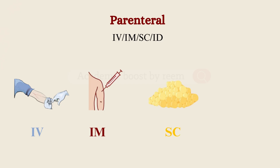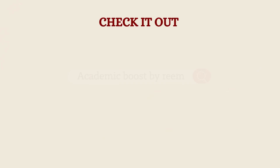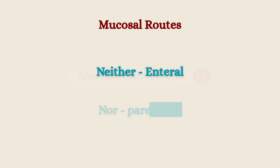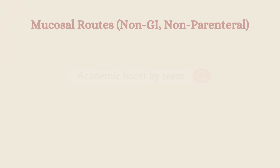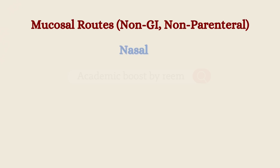The parenteral route bypasses the GI tract, and the drug is given either intravenously, intramuscularly, subcutaneously, or intradermally. There is a separate video explaining these four injection types in detail.